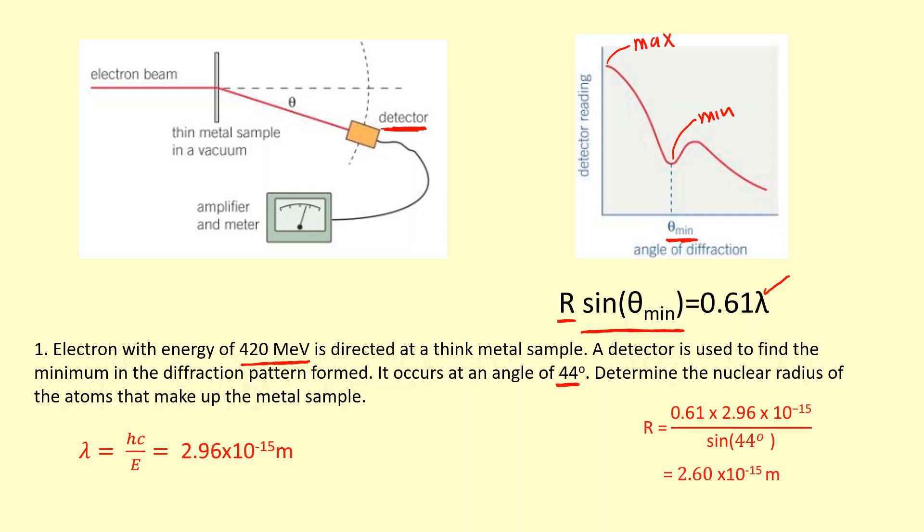So I simply rearrange for R and put the numbers in, and it turns out the radius of the nucleus of the metal sample here is 2.6 times 10 to the minus 15, which is just 2.6 femtometers.